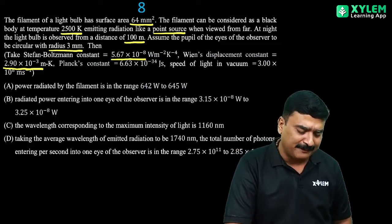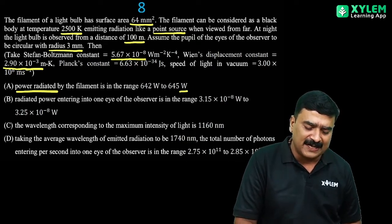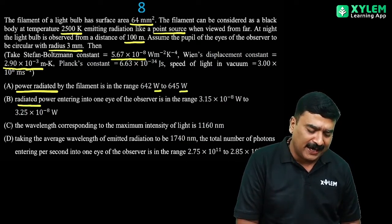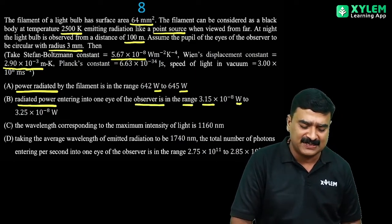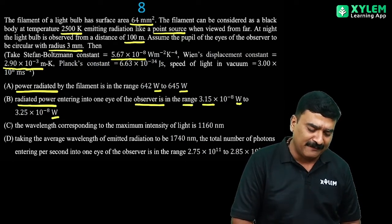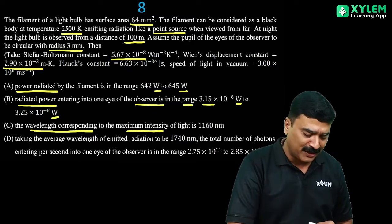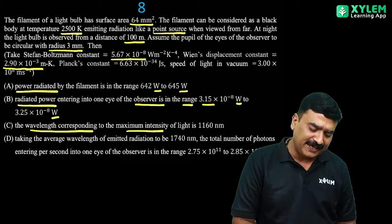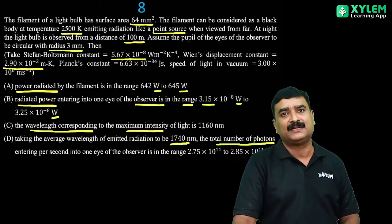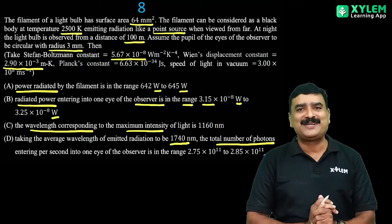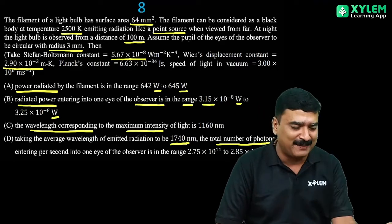The power radiated by the filament needs to be calculated. That's part A - radiated power entering the observer's eye in watts. Part B asks about wavelength corresponding to maximum intensity using Wien's displacement law. Part C involves taking the average wavelength and calculating the number of photons. If more than one option is correct, we need to identify them.